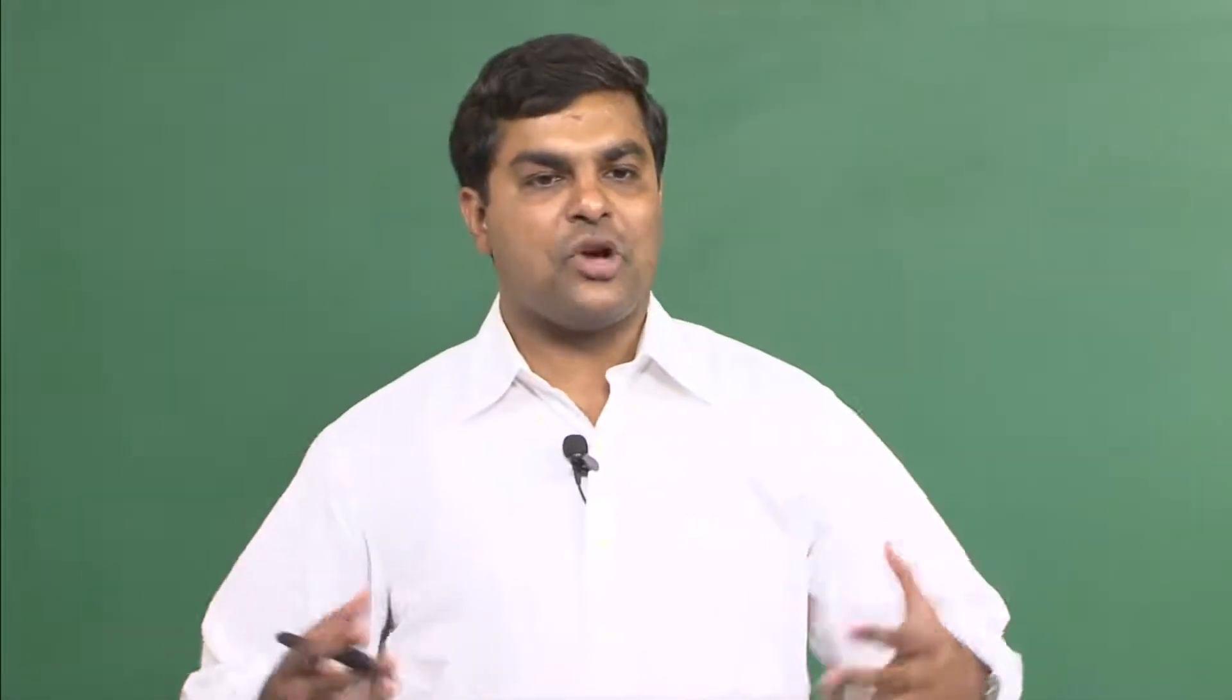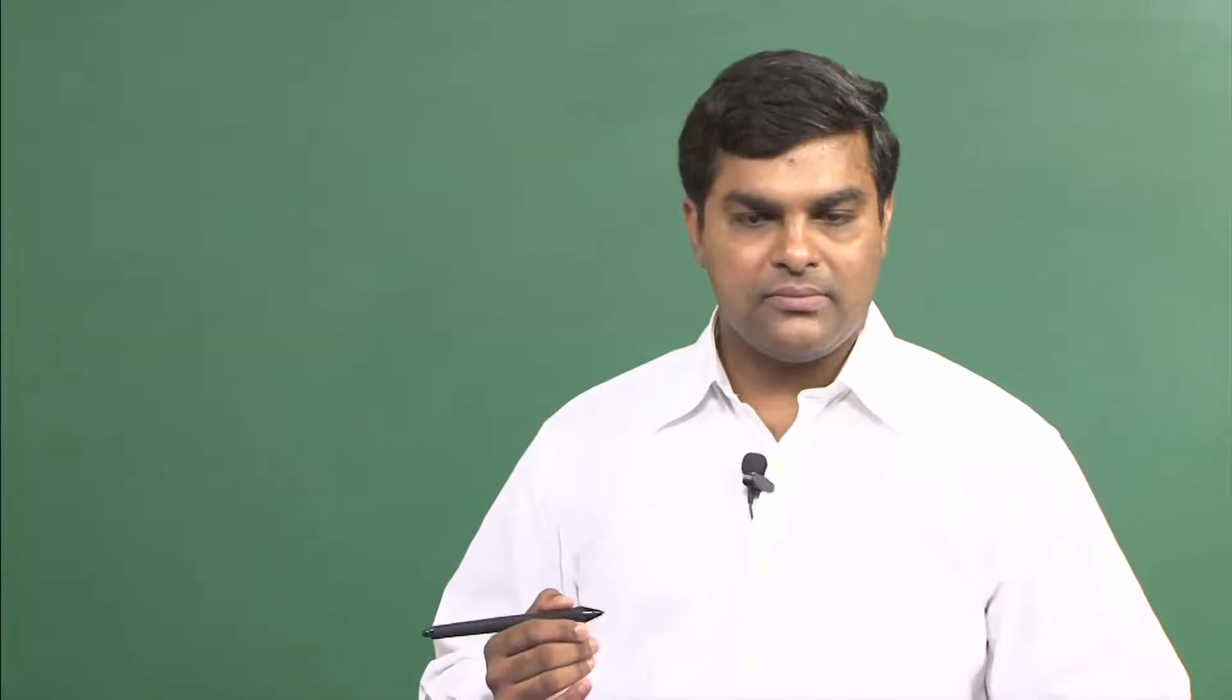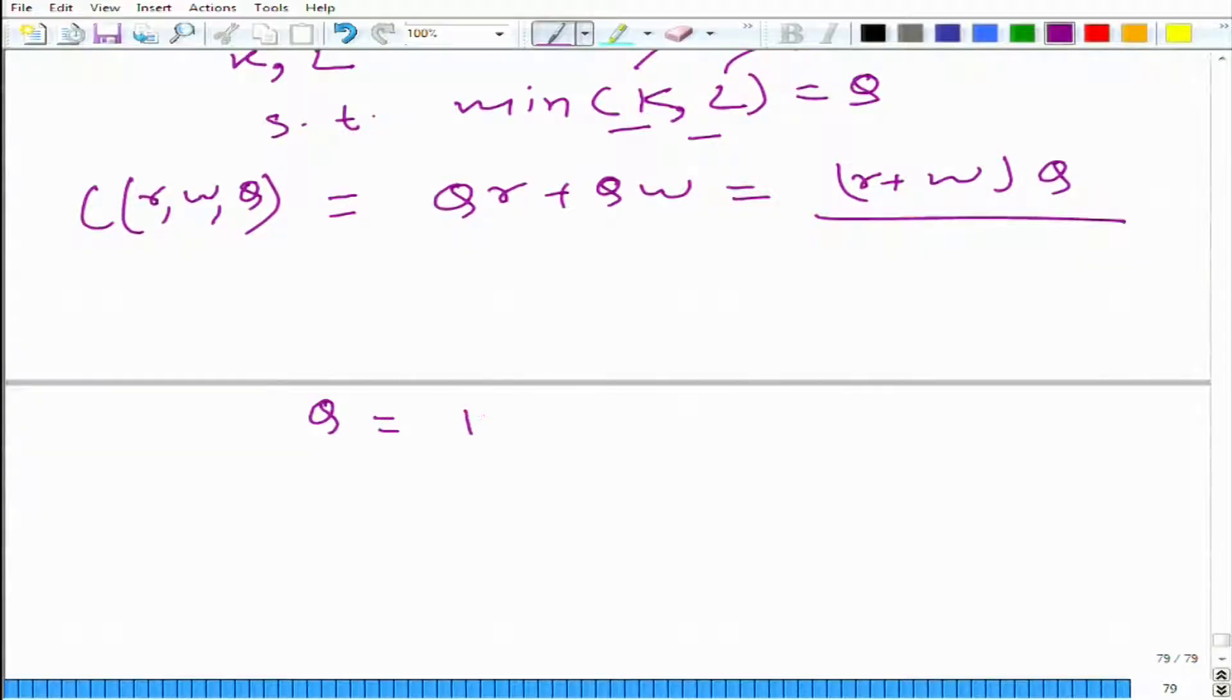Here what we are doing is using some logic to solve these problems, but now if we take a Cobb-Douglas function, the Cobb-Douglas production technology is given as k to the power a and l to the power b. How can we solve this?